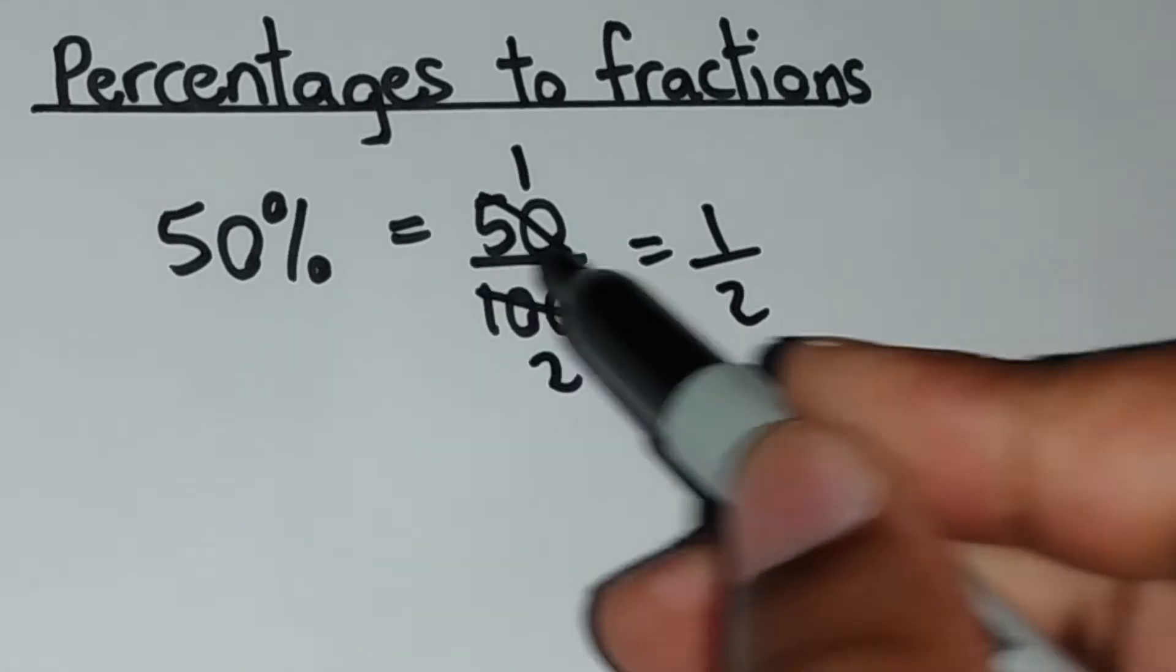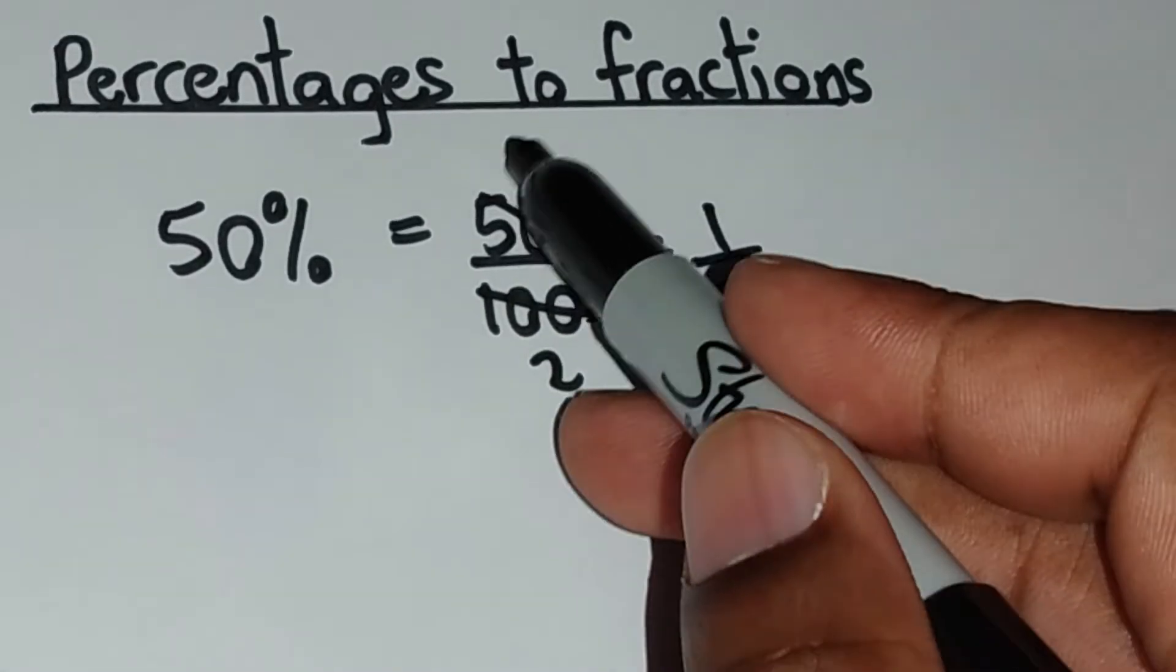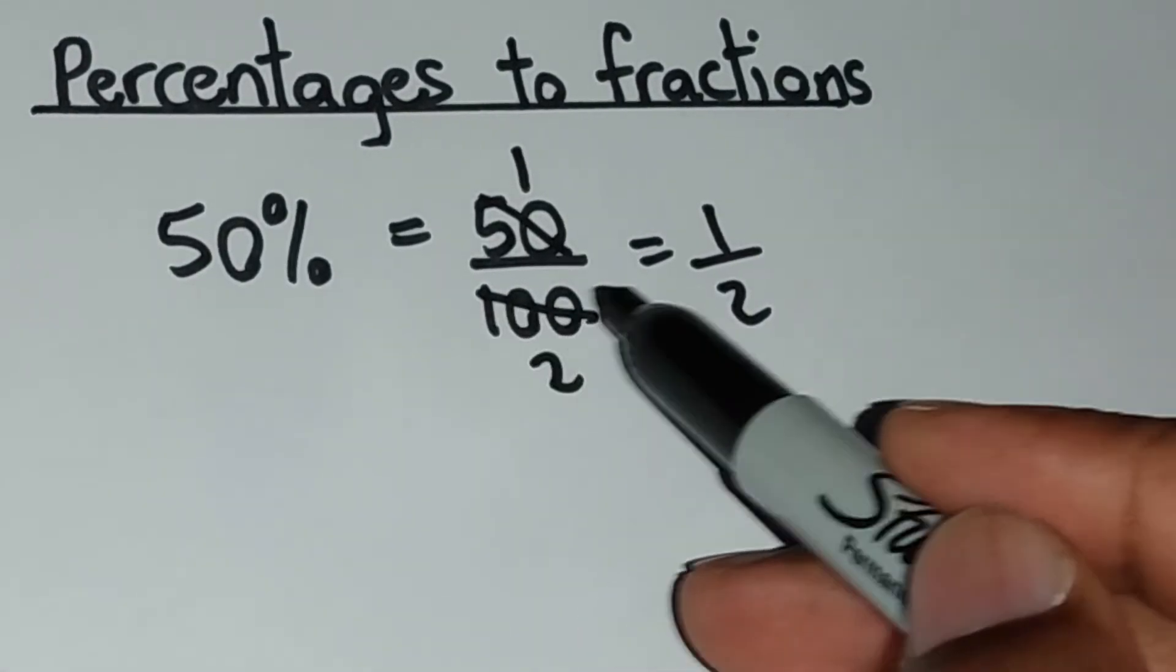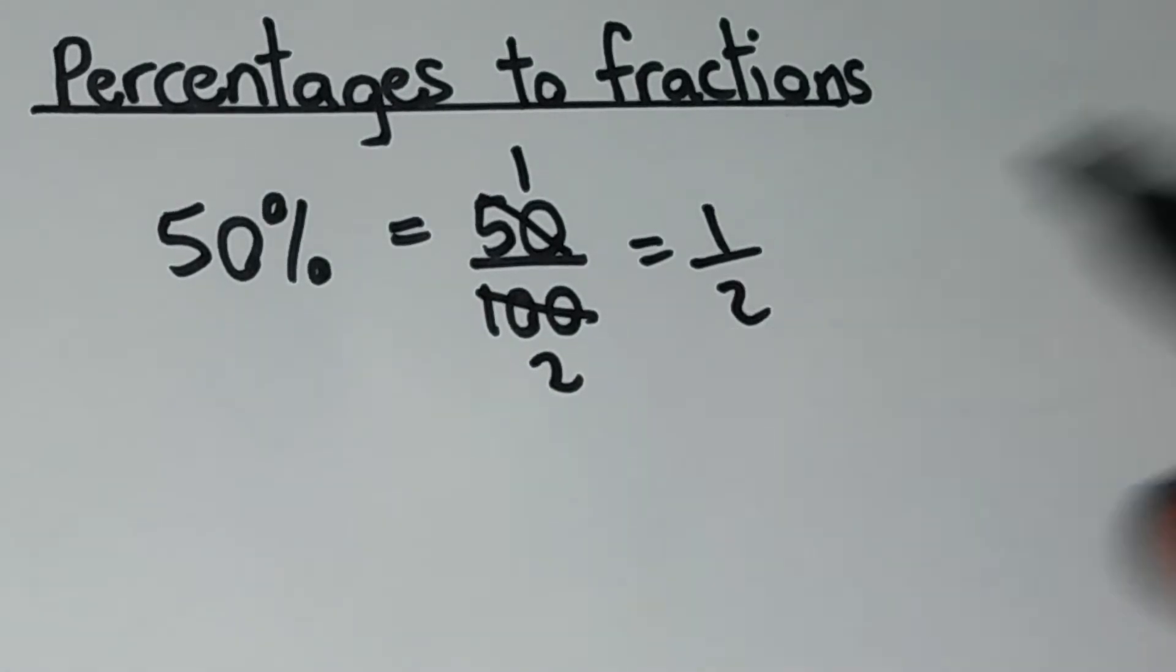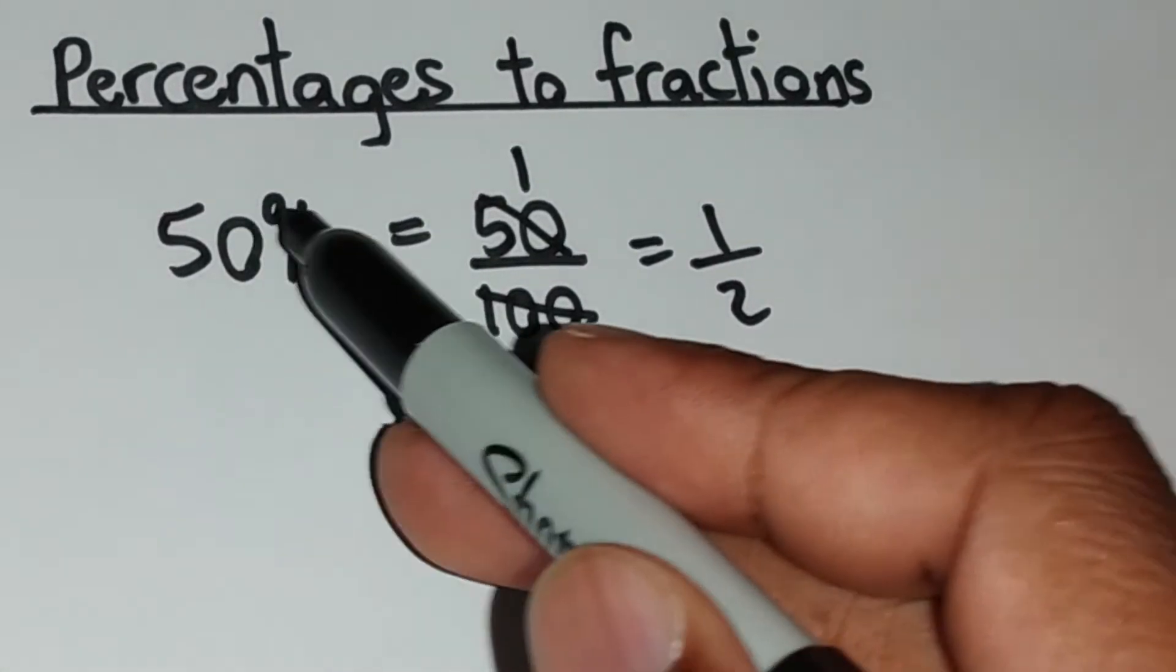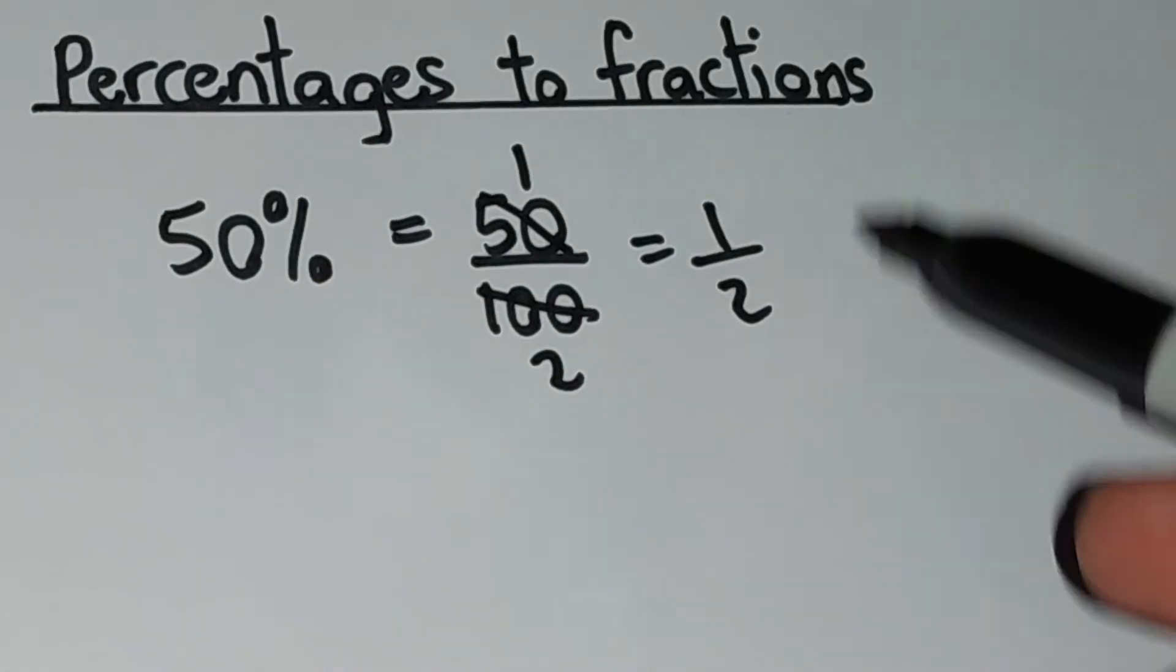So all we did there was to reduce this fraction right here. So 50 going into itself once, 50 into 100 goes two times. So one out of two is the same thing as 50% just in the form of a fraction.